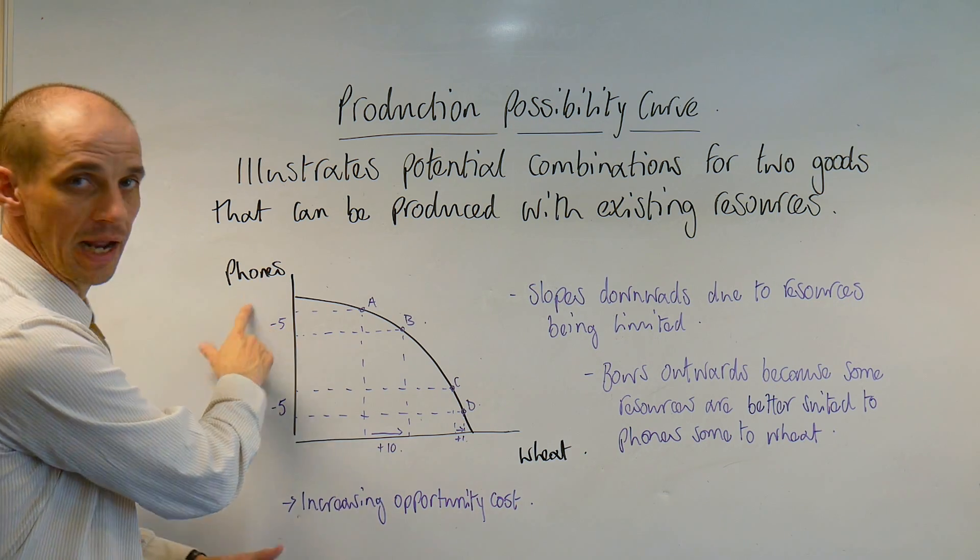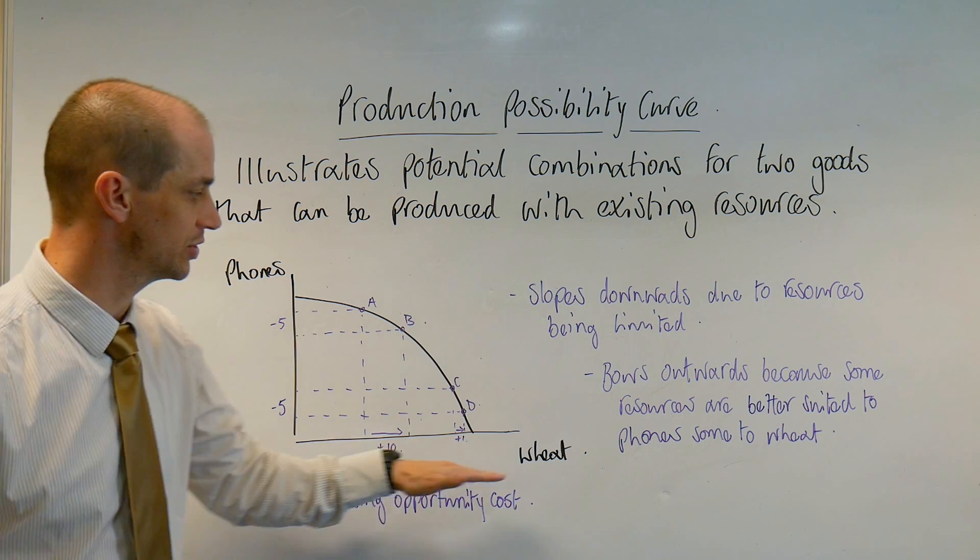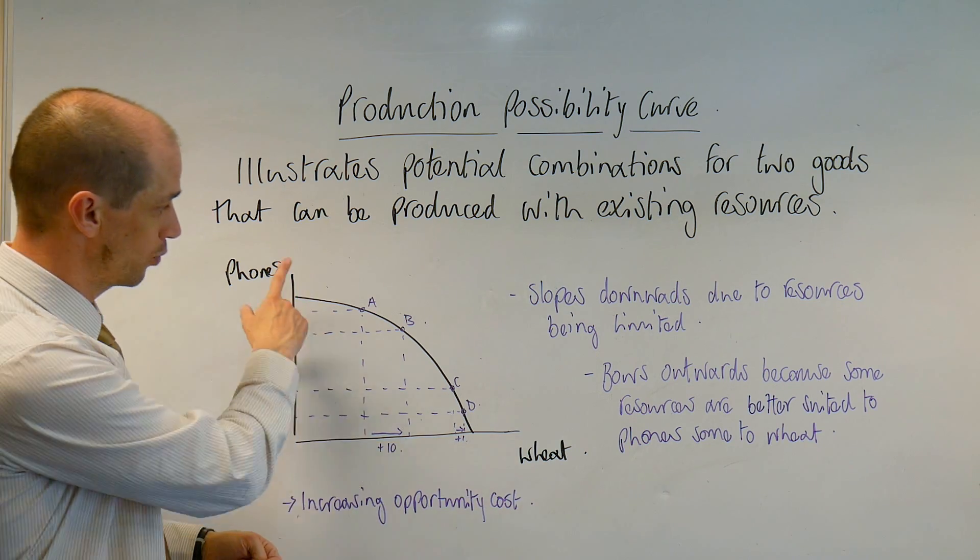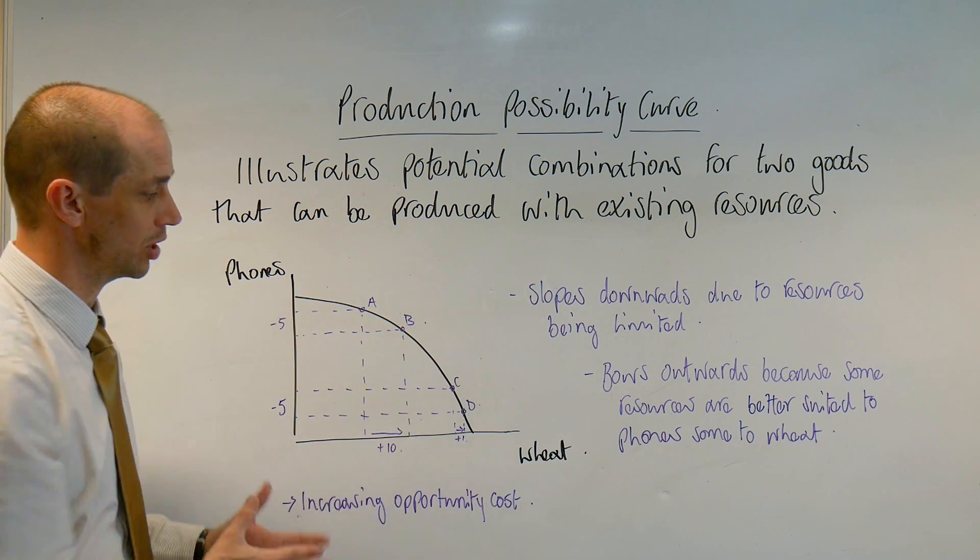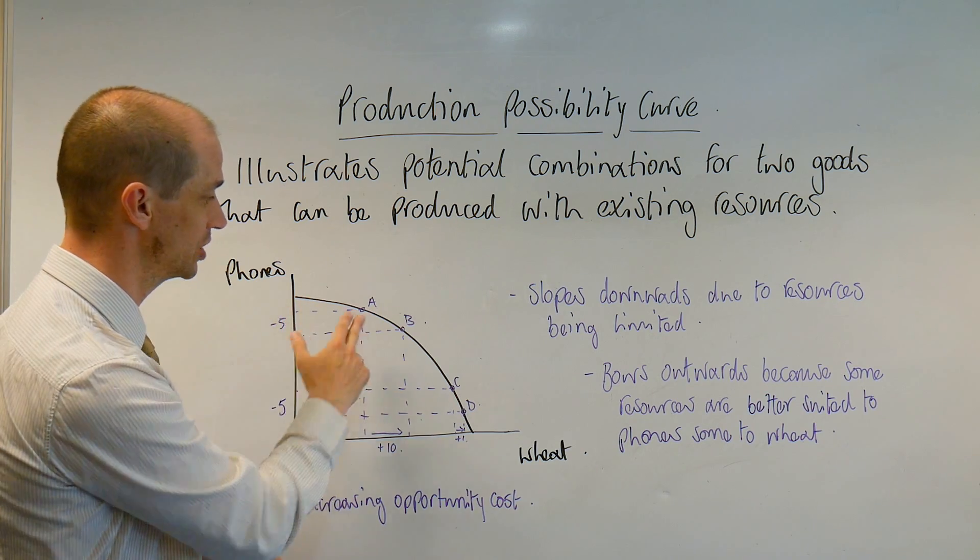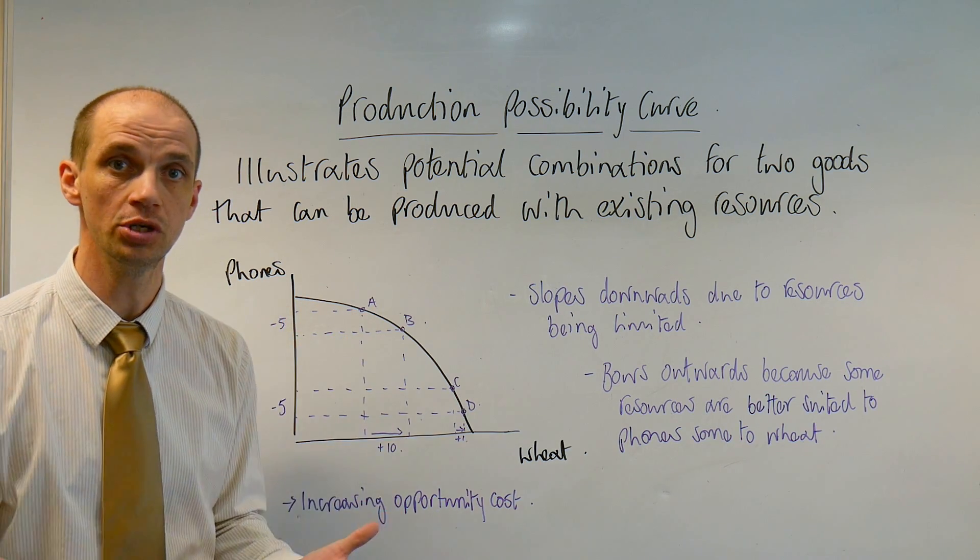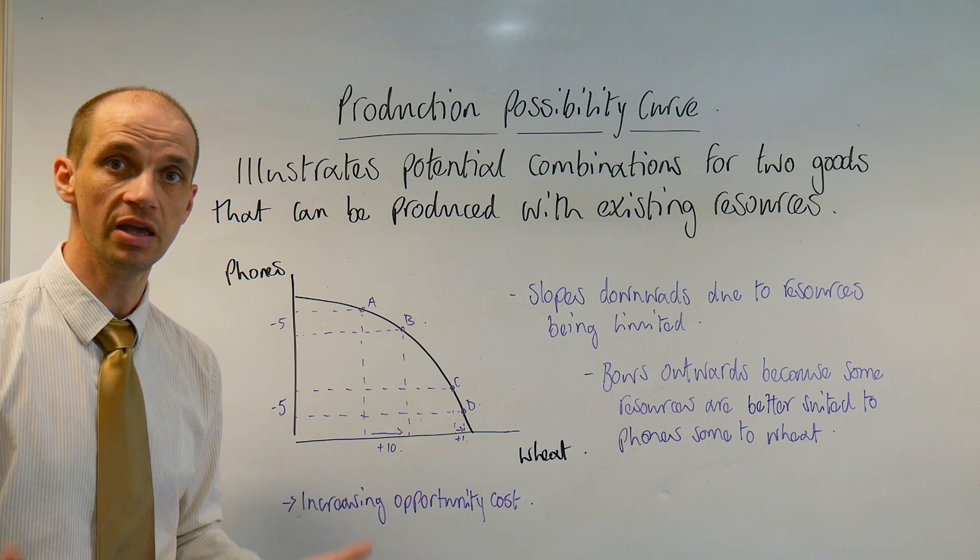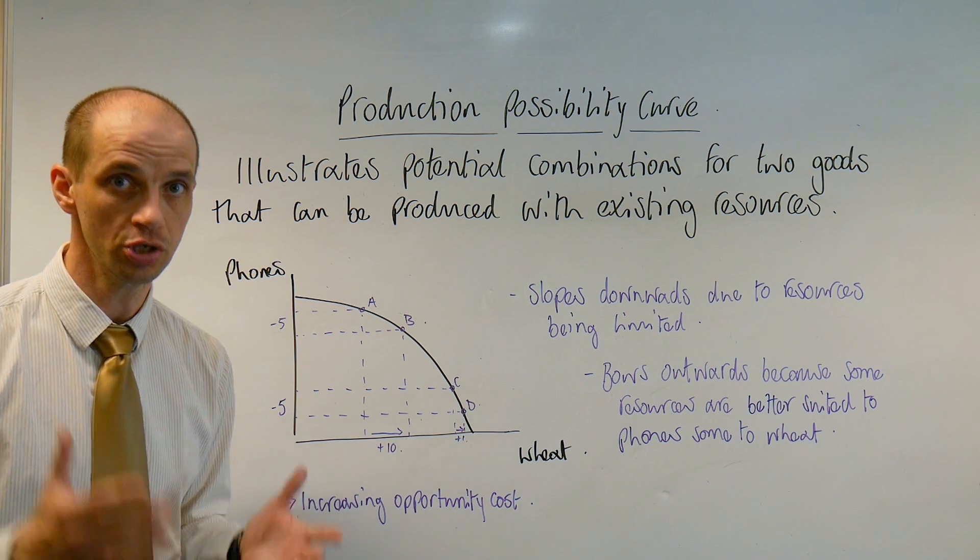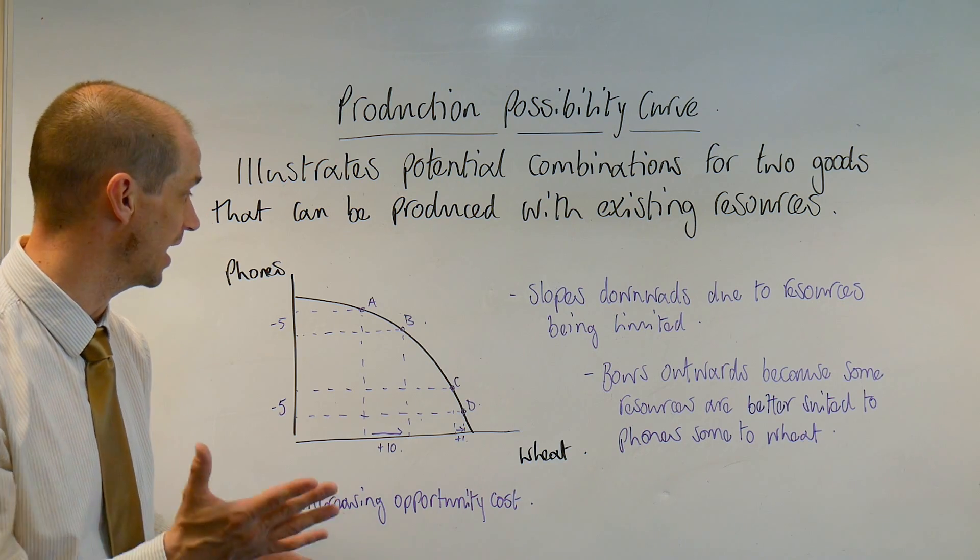You can see that I've drawn out an axis here with phones and wheat, and we can then determine our production possibility boundary according to what is possible to be produced in this economy given the available factors of production or resources that the economy has.